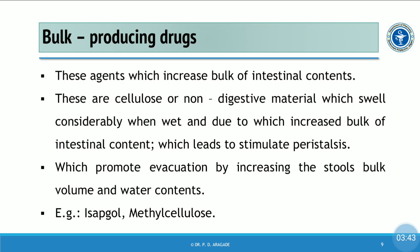The second class is bulk-producing drugs. These drugs are cellulose or non-digestible material which swell when wet, thereby increasing the bulk of intestinal contents. These insoluble, non-digestible materials swell on contact with water, producing bulk in the intestine and stimulating peristalsis movement. They promote evacuation by increasing the stool's bulk volume and water content. For example, isapgol and methylcellulose.